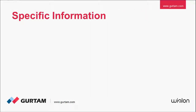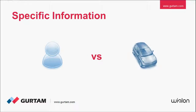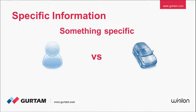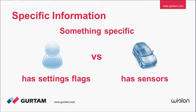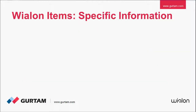Specific information: since different item types serve different purposes, each of them has specific information that helps to solve specific problems. An example of an item's specific information would be image, because not all items have this property. Unlike items unit or unit group, users and other items in Wialon do not have image.